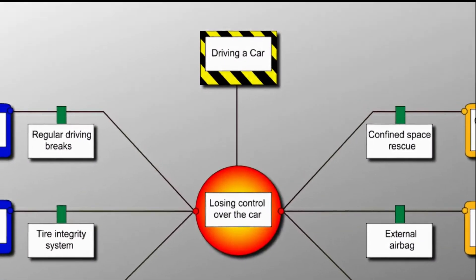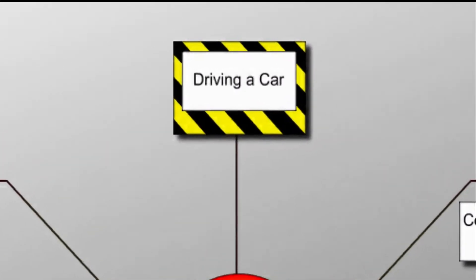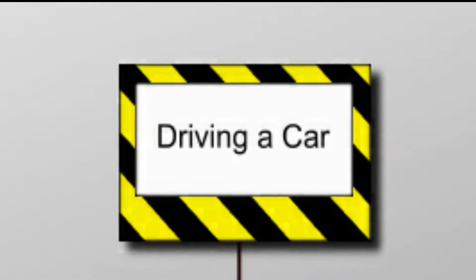Let's take a look at a bowtie example. Here, driving a car is our hazard, represented in the black and yellow box. It is part of our normal business, but it has the potential to cause us harm.